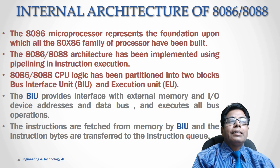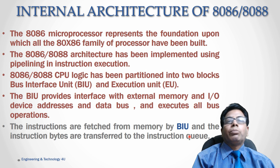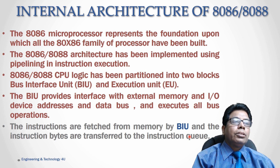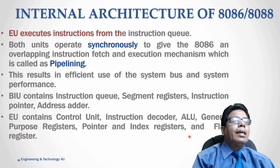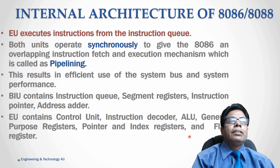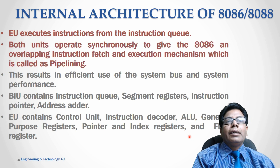There are two blocks: the Bus Interface Unit and the Execution Unit. The Bus Interface Unit, or BIU, provides the interface with external memory and I/O devices for addresses and data. The Execution Unit executes all bus operations, while the BIU fetches instructions from memory and transfers the instruction bytes to the instruction queue. The EU then executes instructions from the instruction queue and is not involved in fetching.